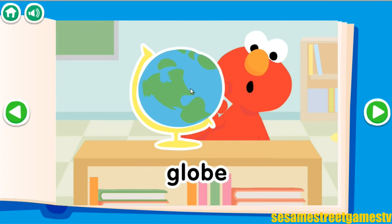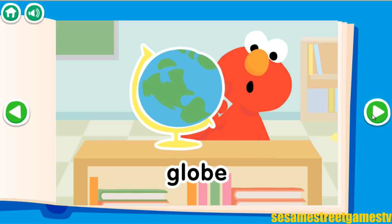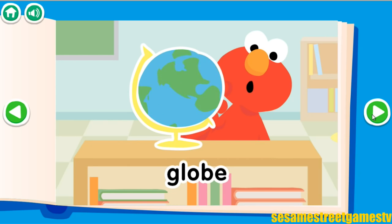Globe. A globe is a sphere or round object on which there is a map of the Earth.